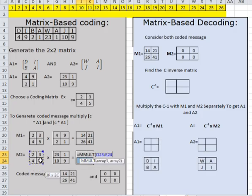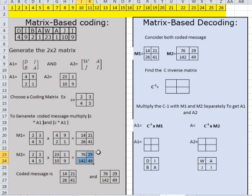Z equals matrix multiplication — first matrix, comma, second matrix, close the brackets, Ctrl+Shift+Enter. This is my second matrix. The uncoded message and these two are the coded matrices.